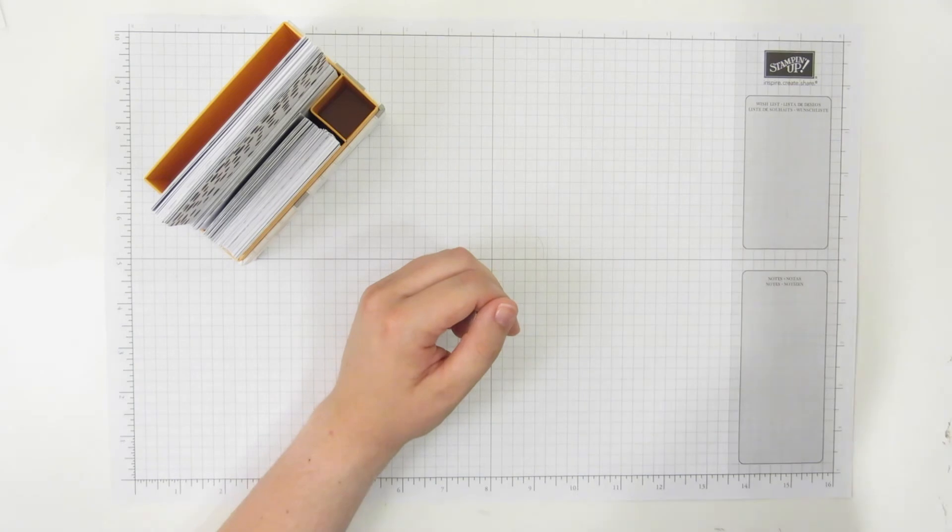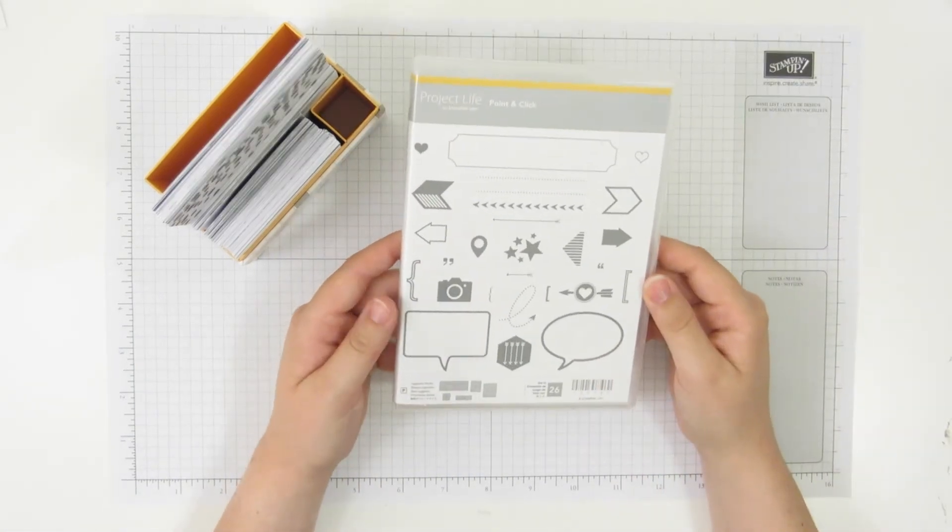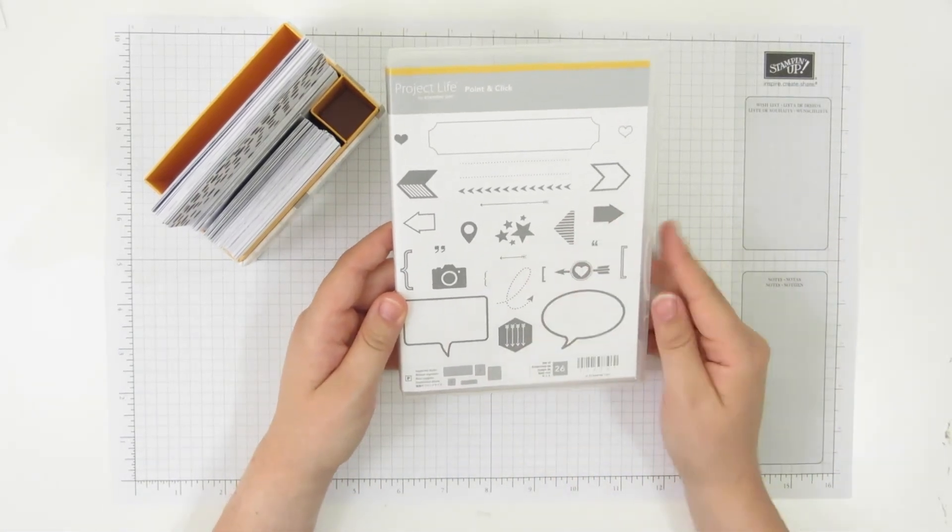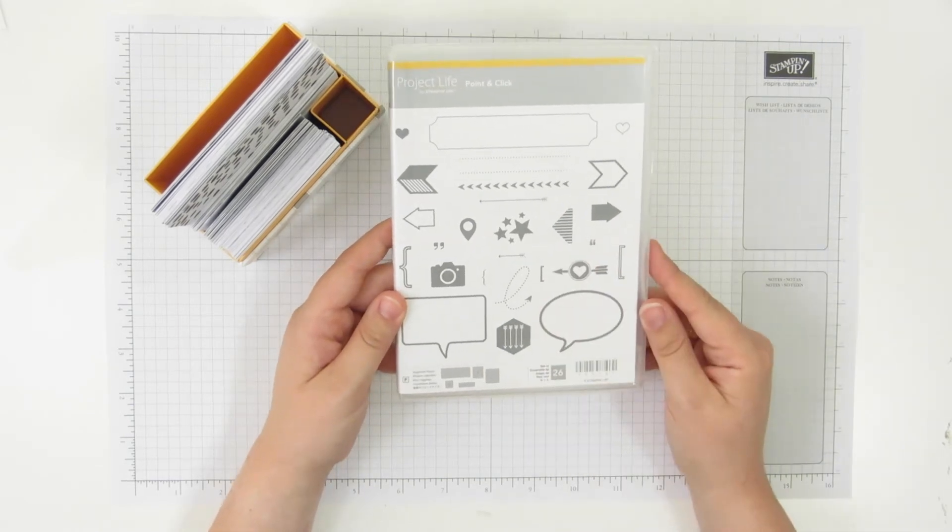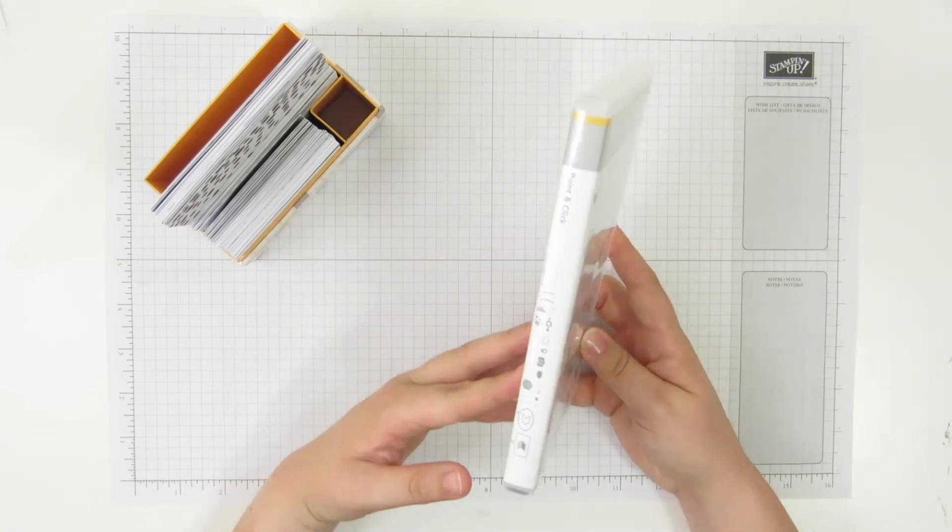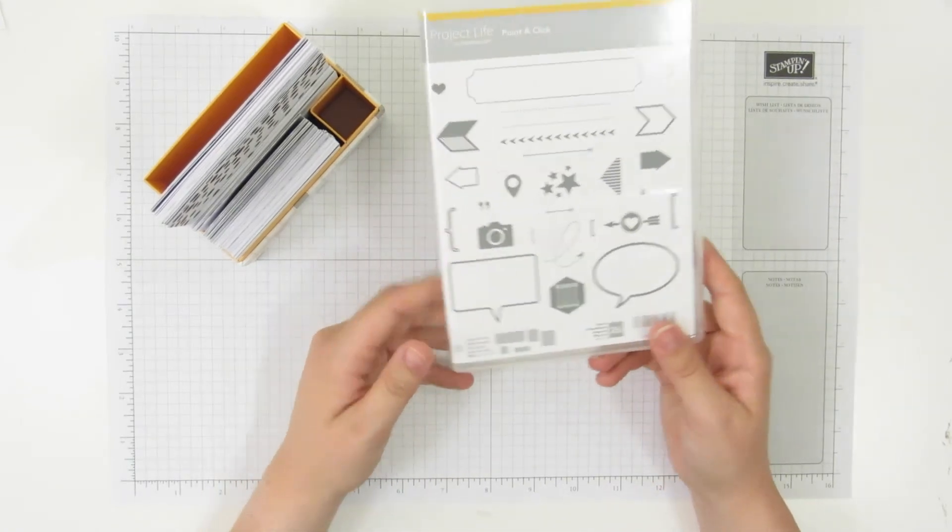Speaking of stamping, there are a few Project Life by Stampin' Up stamp sets of course. They're all photopolymer. This is Point and Click, which I may or may not end up using. I've used it a few times for other projects. They're all in our clear mount cases, so they're all ready to go.